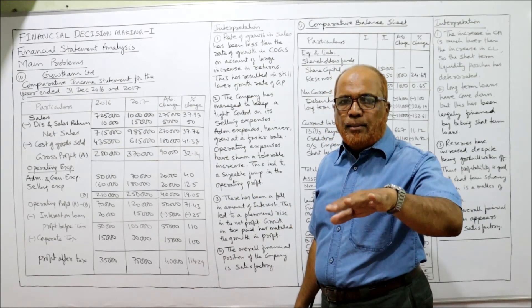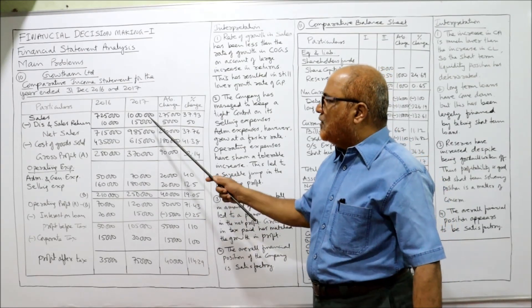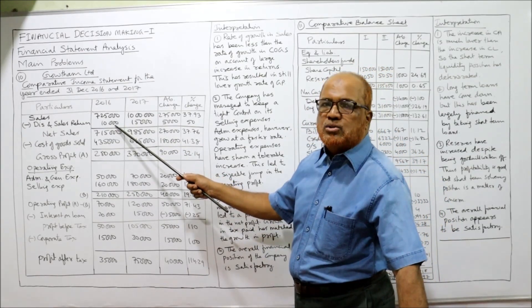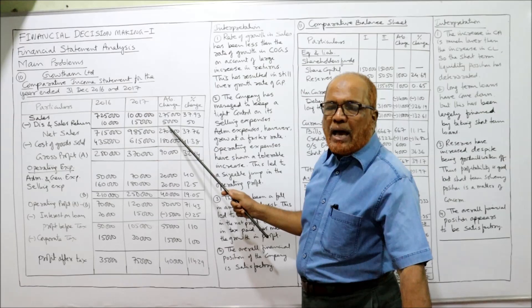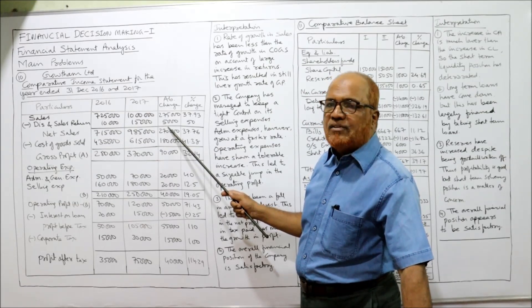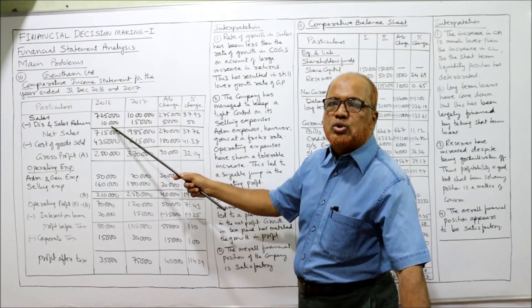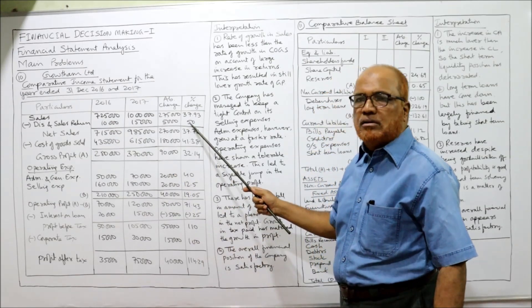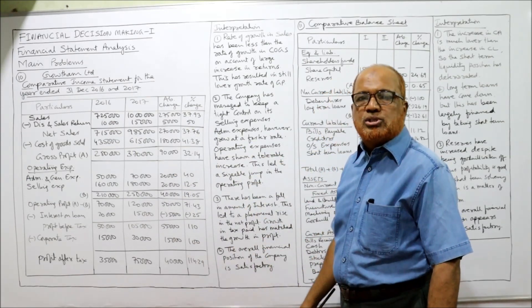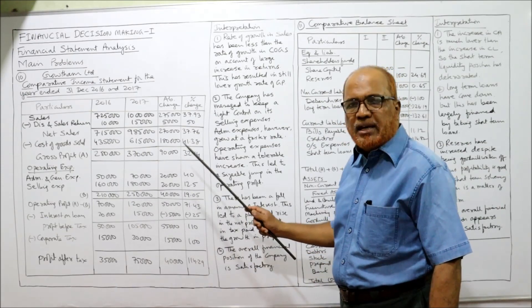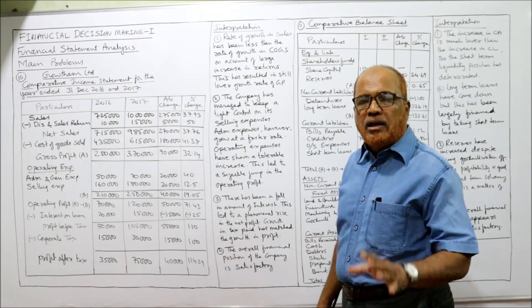Current year minus last year gives absolute change. For example, 15,000 minus 10,000 is 5,000 absolute change. Then absolute change divided by last year figure: 5,000 divided by 10,000 multiplied by 100 gives 50 percent. Like this, make all calculations for absolute change and percentage change.